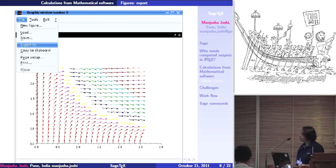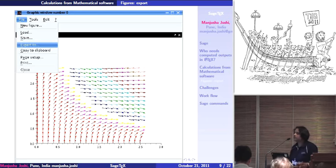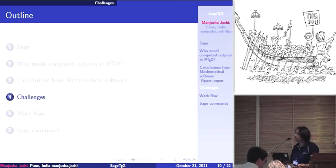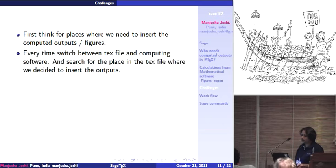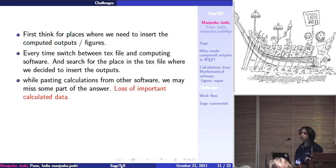So another way of including figures: this is the output of a vector field generated by the software Scilab, which is equivalent to MATLAB. After we generate the output, we have to export it as a JPG file, and then manually include that file in our TeX file. This is the procedure which is generally followed by researchers. That availability is there, but there are then some problems: they have to think about where to input the computed output and figures, and every time they have to switch between the programming language or software and the TeX file.